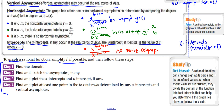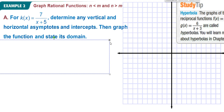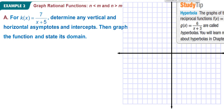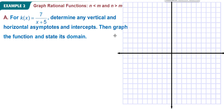Here's problem number two and we're going to go through all of these steps. When we have 1 over x, or 6 over x plus 3, or in this case 7 over x plus 5, these are called hyperbolas. We will learn about those in chapter 7, though we probably won't get to chapter 7 in this course, but definitely in pre-calculus you'll learn more about hyperbolas.